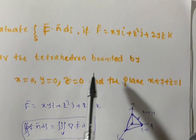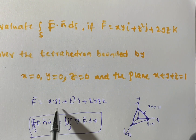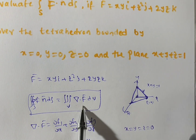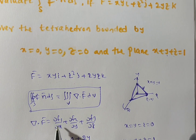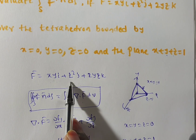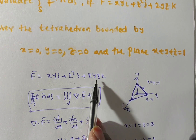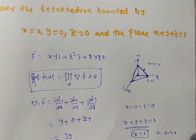First, verify that f̄ is given in the problem. f̄ = xyi + z²j + 2yzk. Now we need to find del · f̄. The divergence is ∂f₁/∂x + ∂f₂/∂y + ∂f₃/∂z. f₁ = xy, so ∂/∂x gives y. ∂/∂y of z² is 0. ∂/∂z of 2yz: z-derivative is 1, so we get 2y. Therefore y + 0 + 2y = 3y, and del · f̄ = 3y.